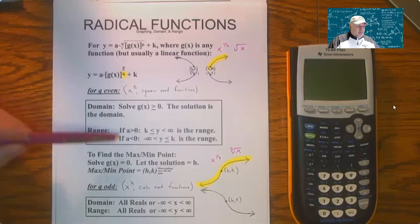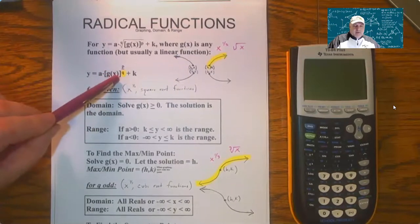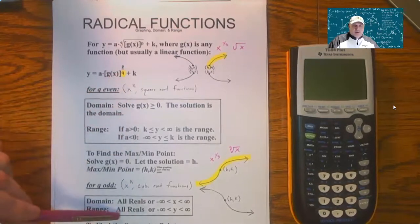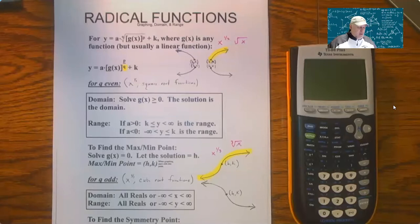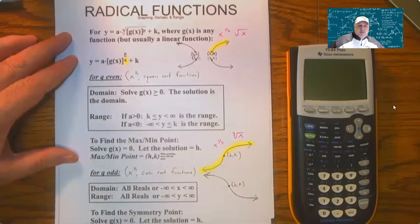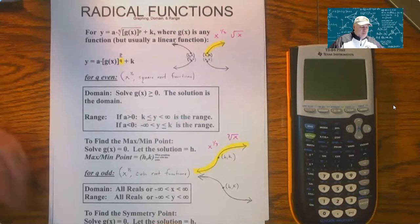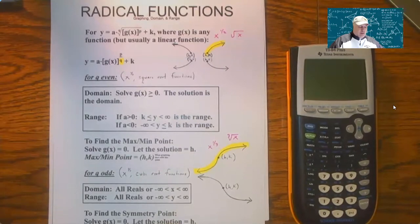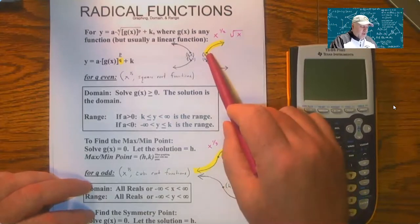So the domain and range, when it comes to square root functions or when this denominator is even, we're going to have to figure out. And for cube root functions, because cube roots can be positive or negative, there's no restriction on the domain and range. It basically is all reals if this denominator is an odd number. So it's going to be all about finding out the symmetry point for cube root functions and what I call the starting point for square root functions.